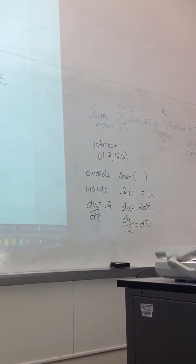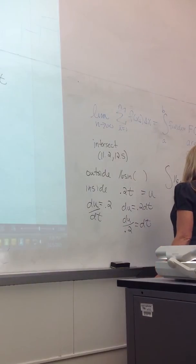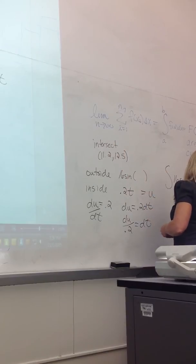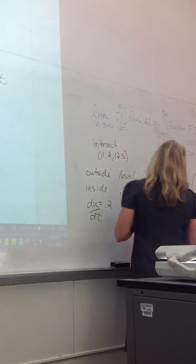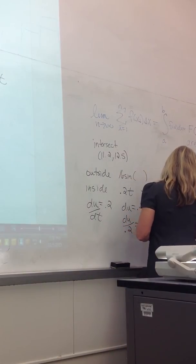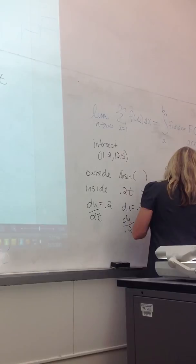And if I then substitute, I would have 16 times sine of u, and the dt would get replaced with du over 0.2. So 16 divided by 0.2 would get multiplied by a negative cosine of u, and we said this was 80.